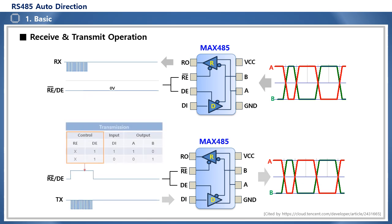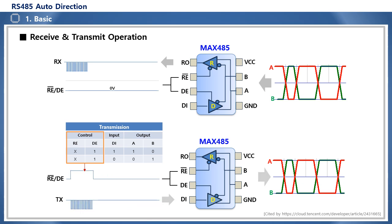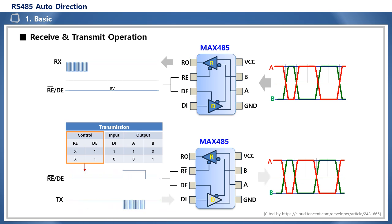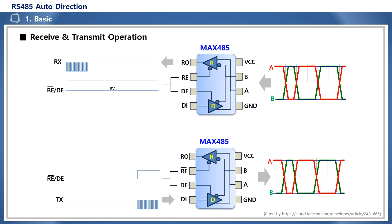In the case of transmission mode, according to the transmission mode function table, regardless of the state of the RE pin, if the DE pin is high, MAX485 becomes the transmission mode. At this time, the serial transmission signal TX from the MCU is converted into a signal in the form of 485 and transmitted to the A and B communication lines, which are the 485 external interface pins, through the driver D inside the IC, due to the nature of the half-duplex communication structure, which must selectively transmit and receive on a single communication line.